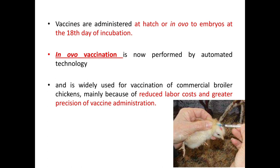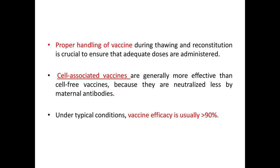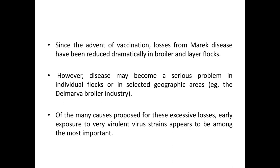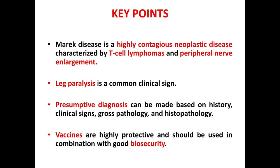Vaccines are administered at hatch or in ovo to embryos at the 18th day of incubation. In ovo vaccination is now performed by automated technology and is widely used for vaccination of commercial broiler chickens, mainly because of reduced labor cost and greater precision. Proper handling of vaccine during thawing and reconstitution is crucial to ensure that adequate doses are administered. Cell-associated vaccines are generally more effective than cell-free vaccines because they are neutralized less by maternal antibodies. Under typical conditions, vaccine efficiency is usually more than 90%. Since the advent of vaccination, losses from Marek's disease have been reduced dramatically in broiler and layer flocks. However, disease may become a serious problem in individual flocks or selected geographic areas, with early exposure to very virulent virus strains appearing to be among the most important causes of excessive losses.